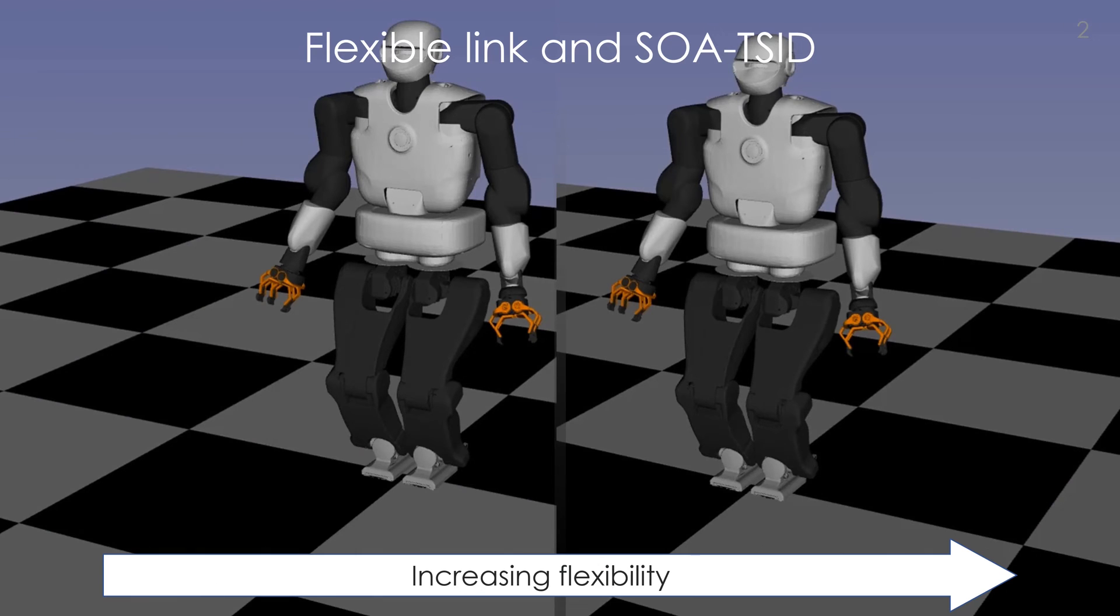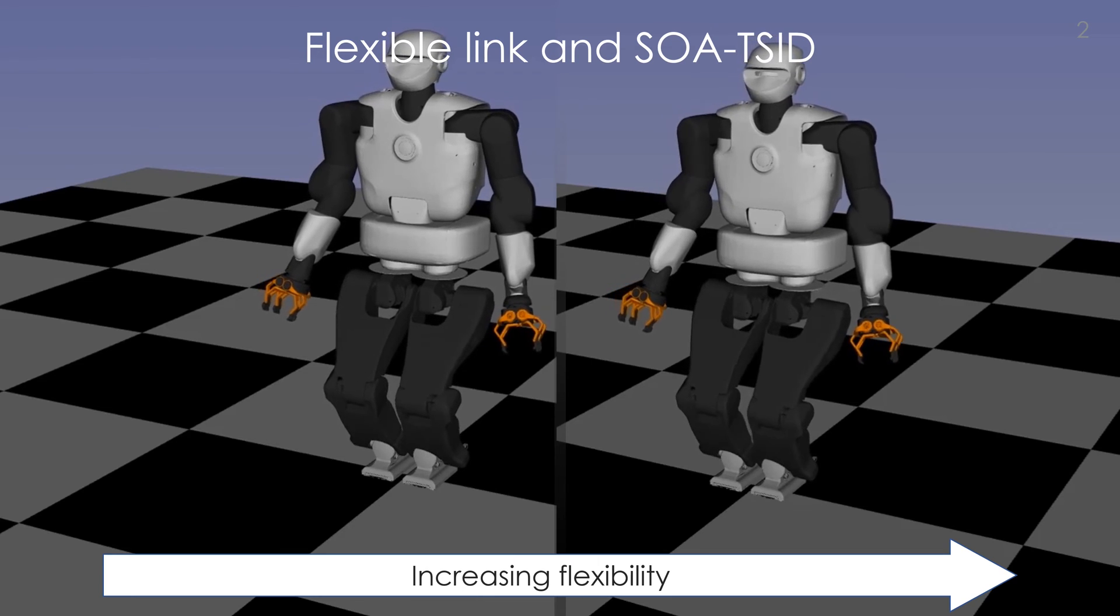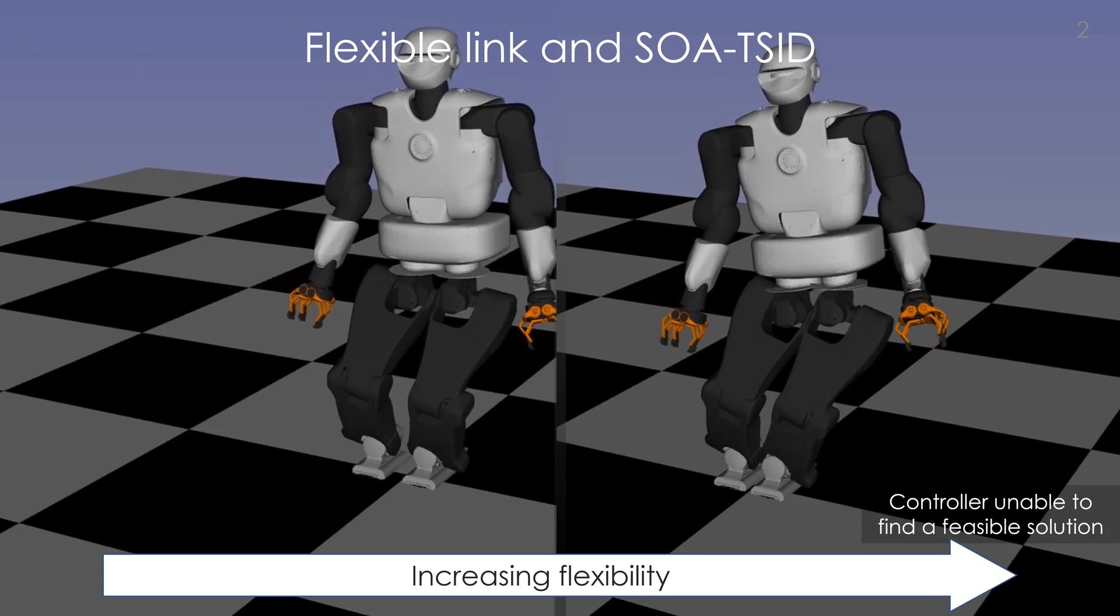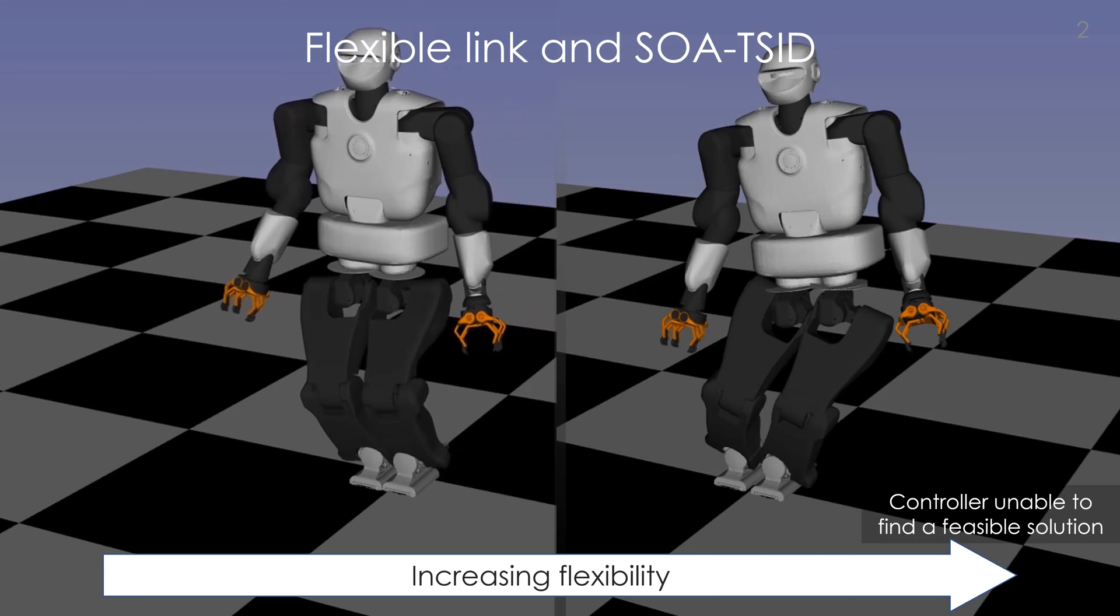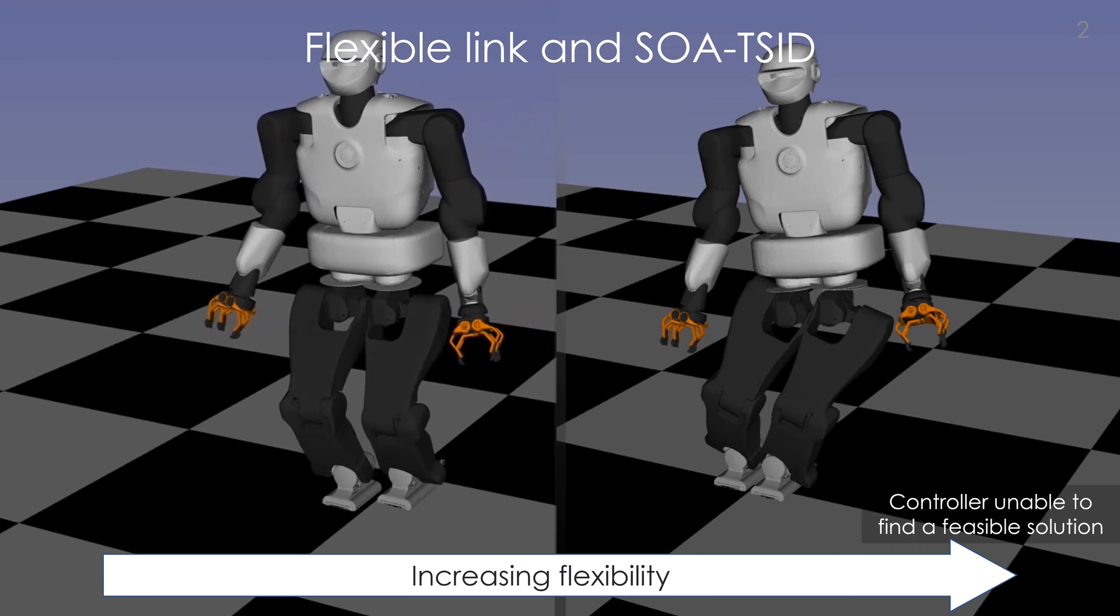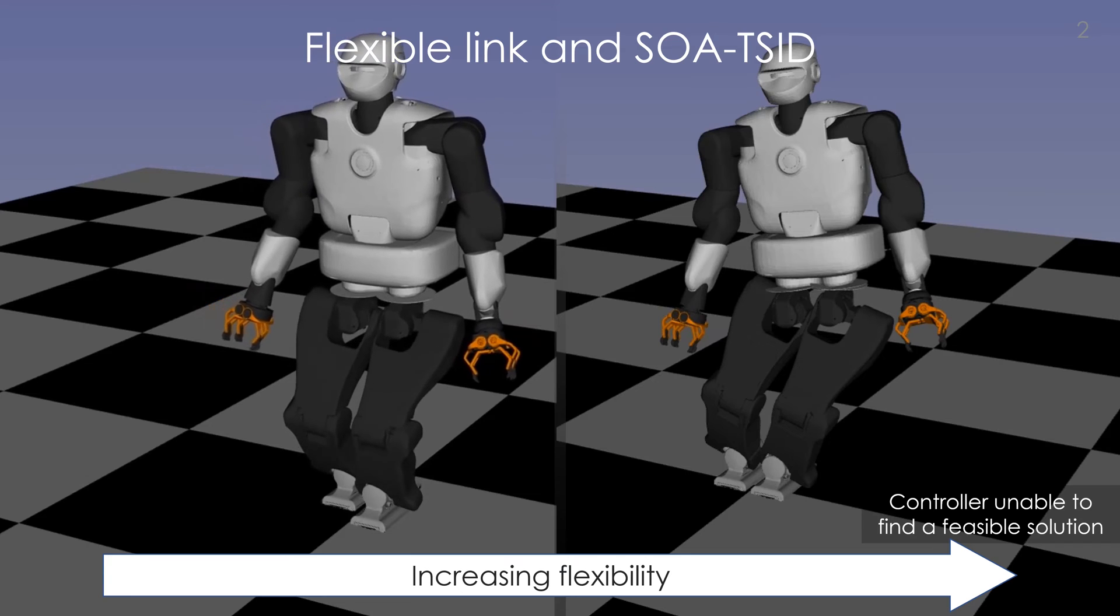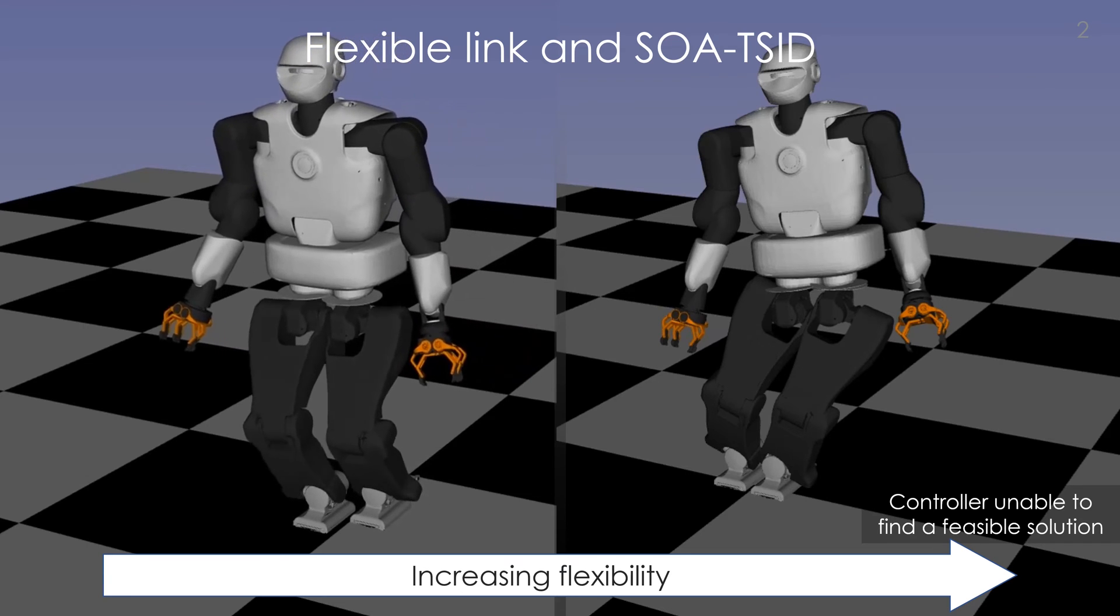When the links of a robot are stiff enough, controllers based on rigid body assumption work fine. However, when the robot is affected by concentrated link flexibility, it is required to design control strategies that consider such elasticity.